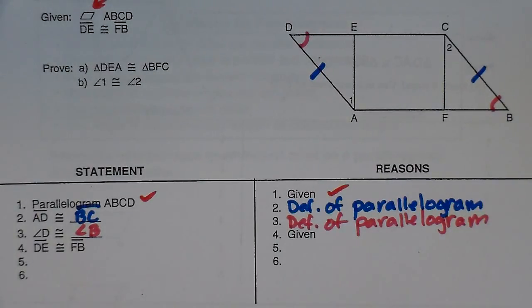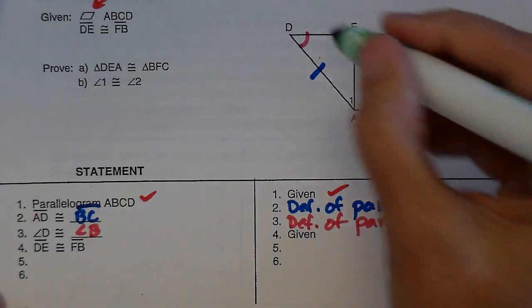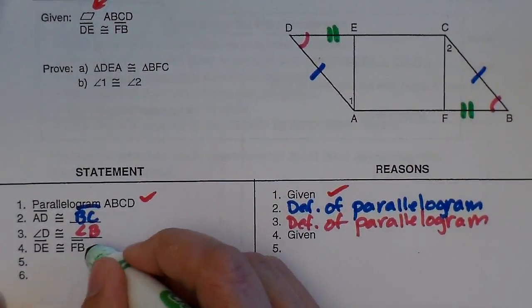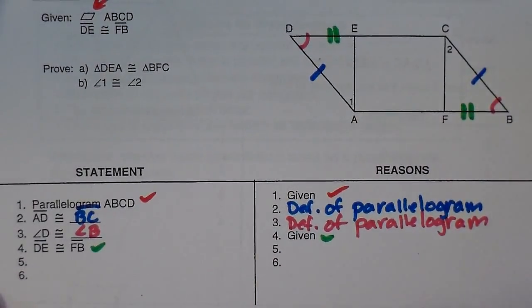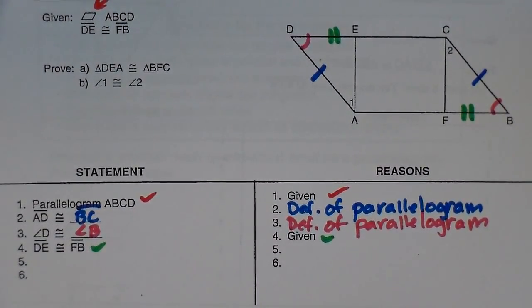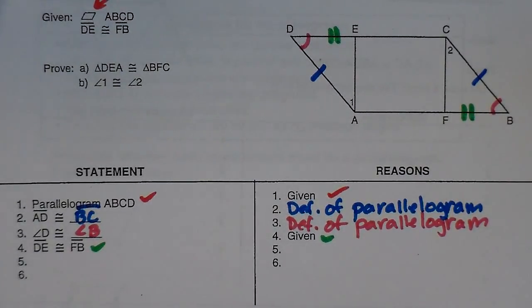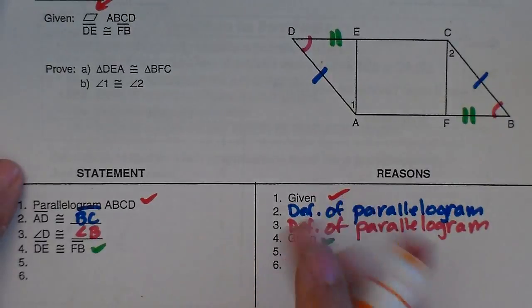The next one says that DE is congruent to FB. So DE is congruent to FB. How do I know that? That is a given, that's my second given. So the question is, how do I go from here? Well, I can now state that these two triangles are congruent.